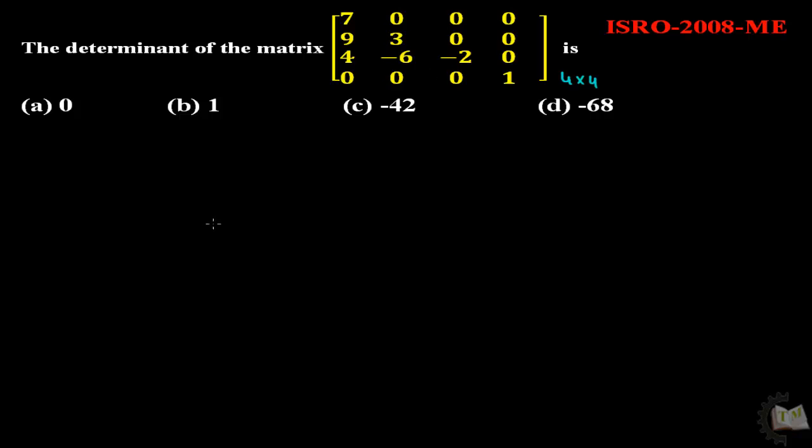The determinant of this matrix will be 7 whole into determinant of this term: 3, 0, 0, minus 6, minus 2, 0, 0, 0, 1. Next step.